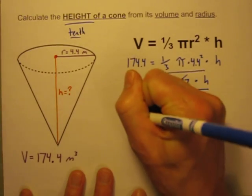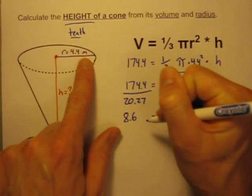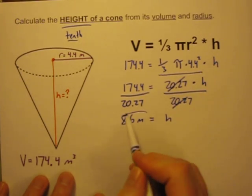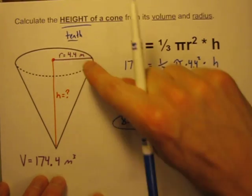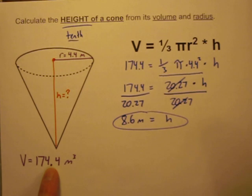Rounding to the nearest tenth gives us 8.6 meters. So the height of this cone, given this radius and this volume, must be 8.6 meters.